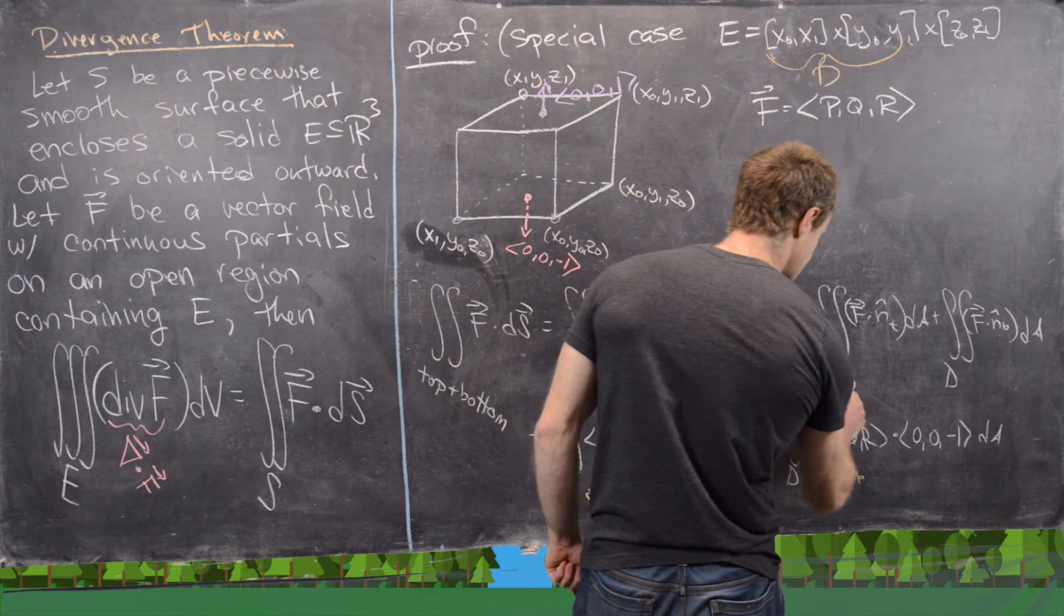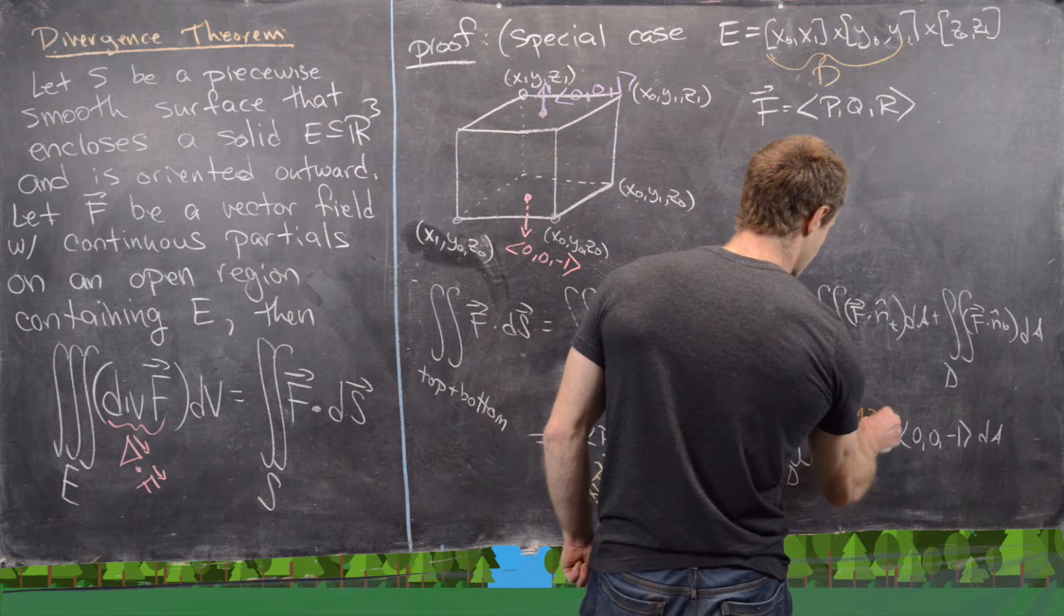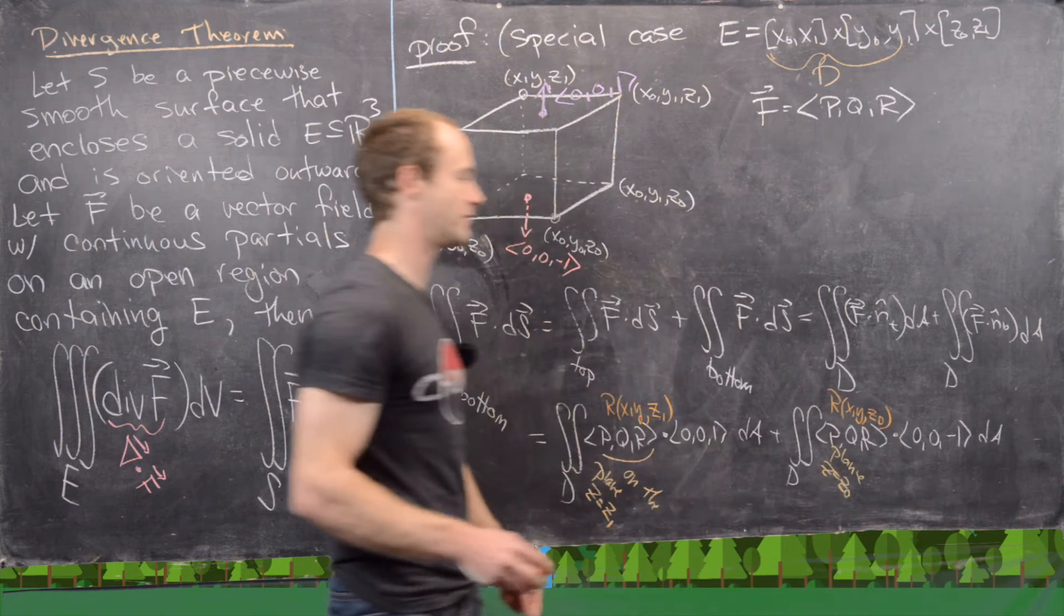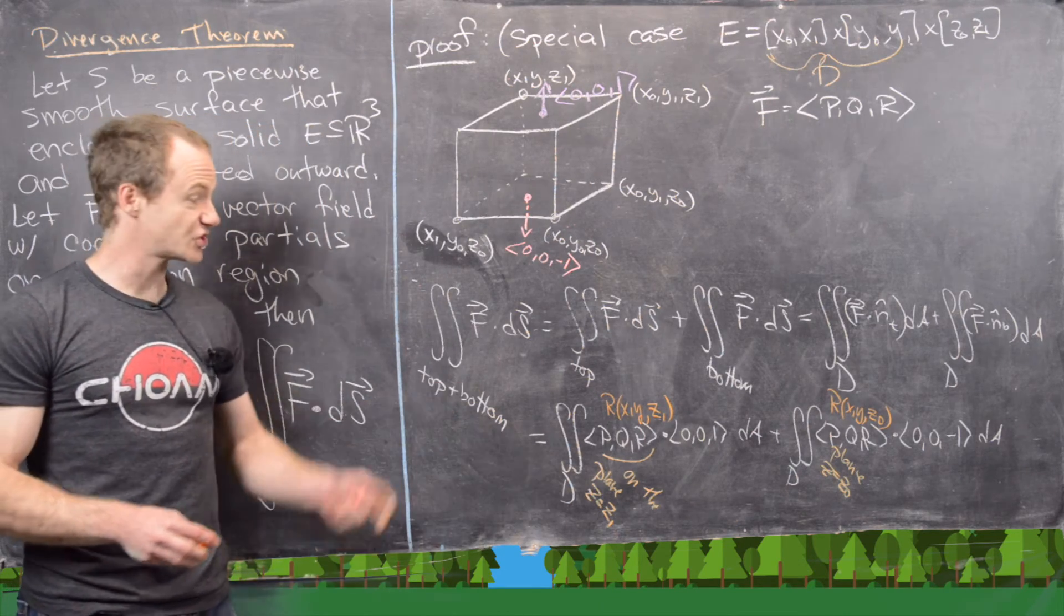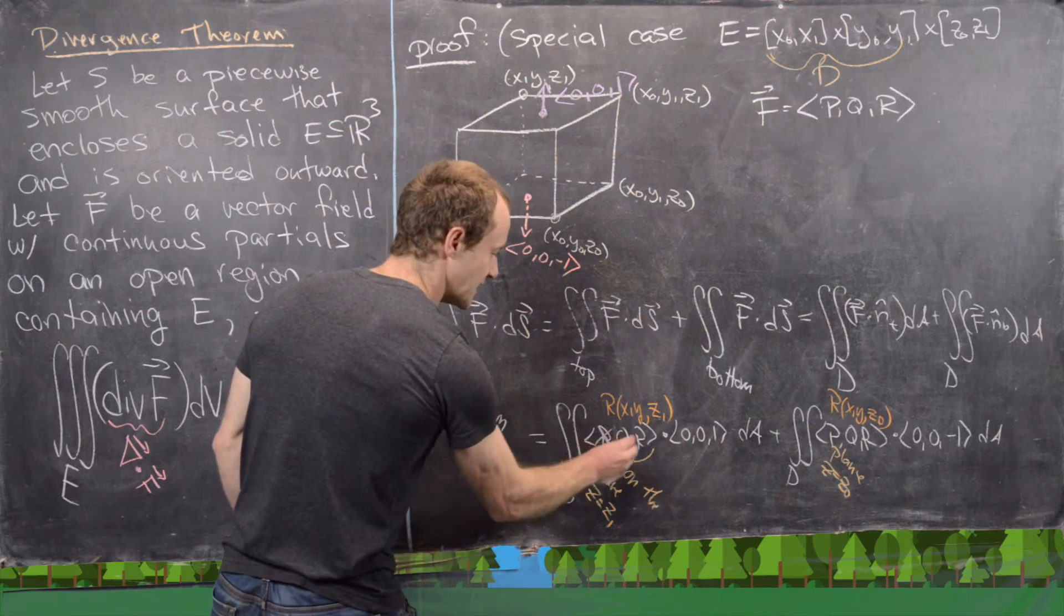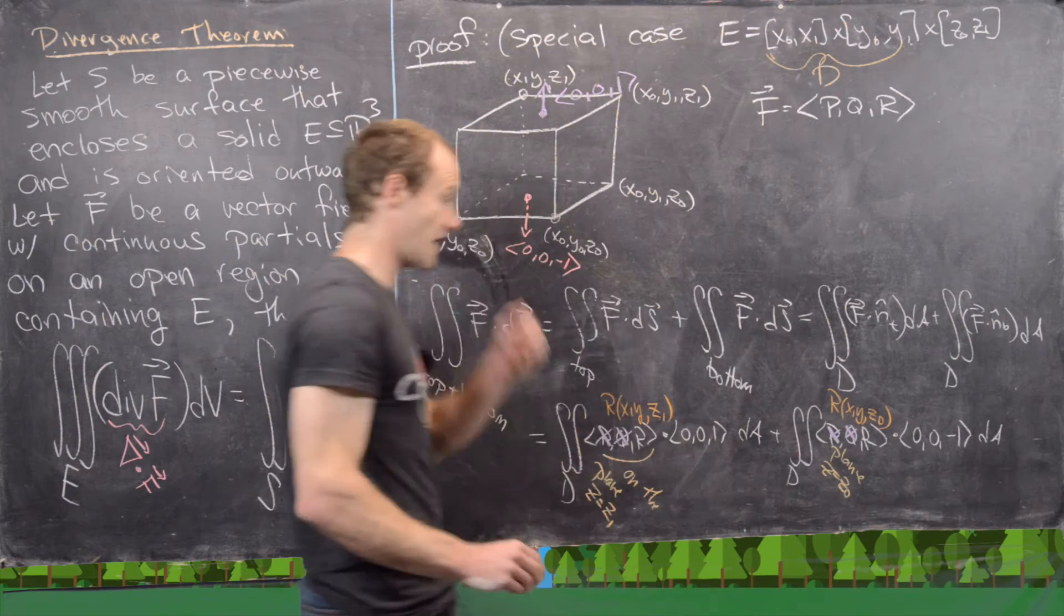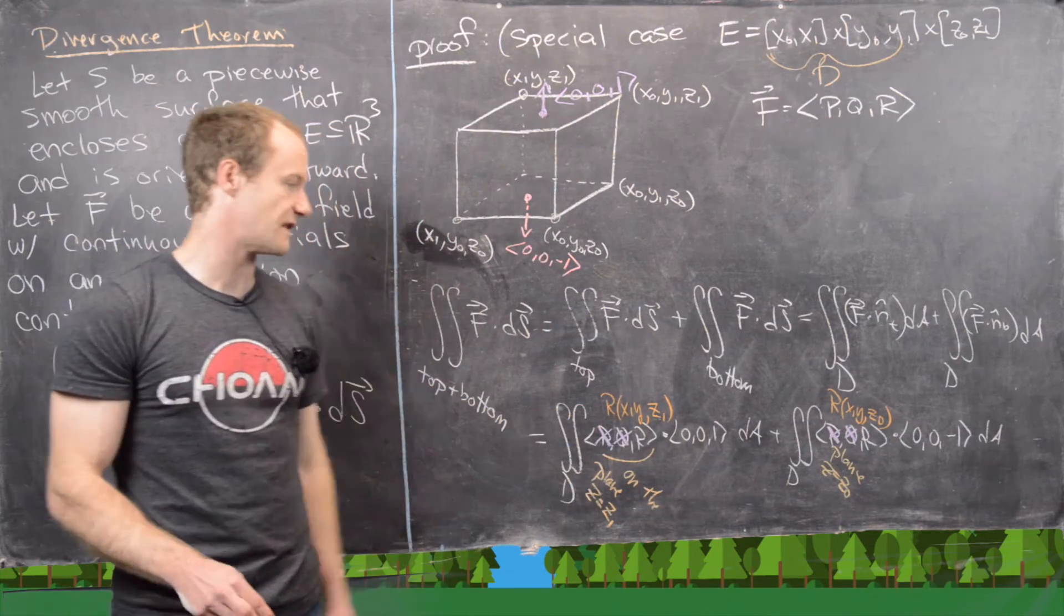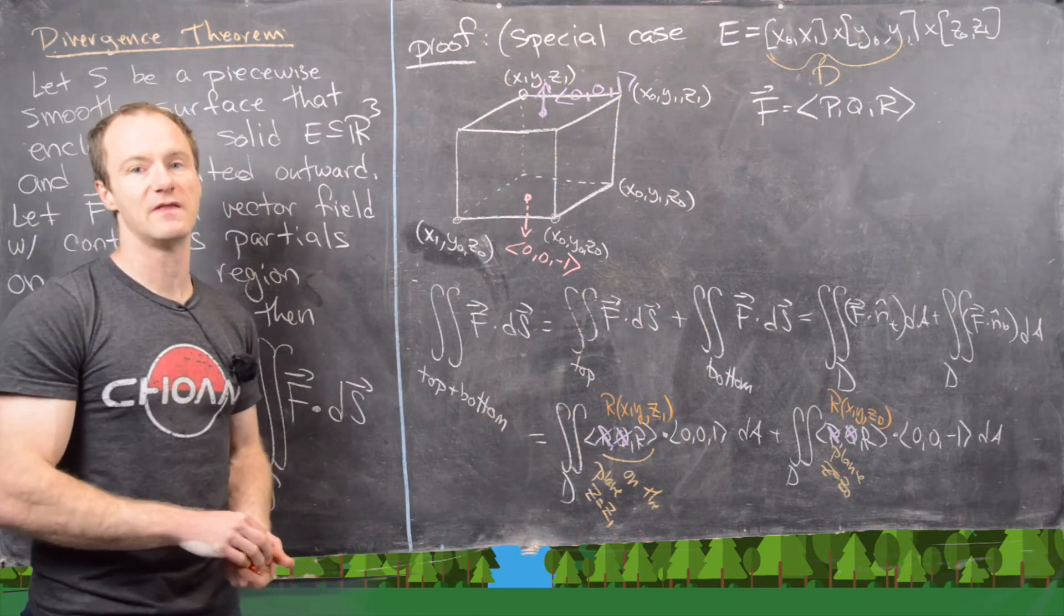So if we were to write our functional dependence here, we would have r depends on x and y, and those are still variables, but then we're fixed on the top plane, and so we're fixed at z₁. And then furthermore, the same thing goes here, so r is going to depend on x and y, those are still variables, but we're fixed on the bottom plane, so we're fixed at z₀. And I just wrote r here because notice when we do this dot product, these two zeros cancel the p and the q, and so what we end up getting is only the integral of r.